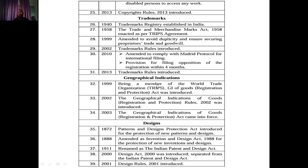Regarding Geographical Indications, there were three amendments: in 1999, as a member of the WTO and in line with TRIPS, the Geographical Indications of Goods Registration and Protection Act was introduced. In 2002, the Geographical Indications of Goods Registration and Protection Rules 2002 were introduced. In 2003, the Geographical Indications of Goods Registration Act came into force.